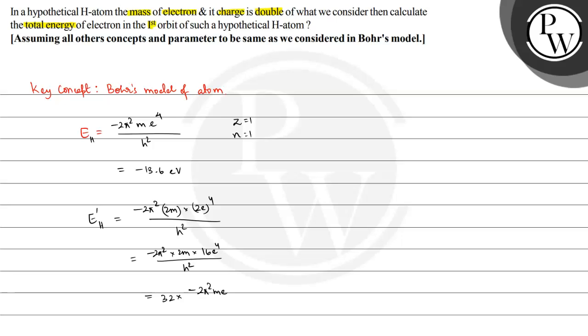equals 32 times the energy of normal hydrogen atom in the first orbit. That equals 32 multiplied by minus 13.6 electron volts, and the value is